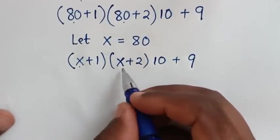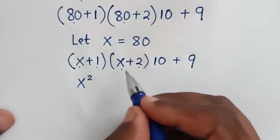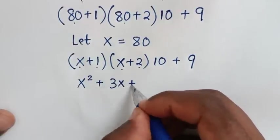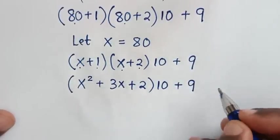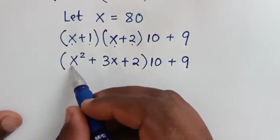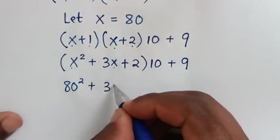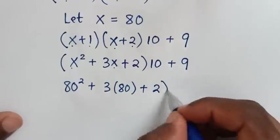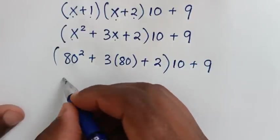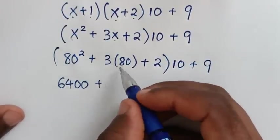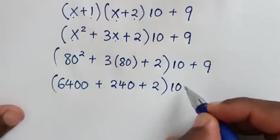Then into here, x times x is x squared, x times 2 is 2x, plus 1 times x is x, so 2x plus x gives plus 3x, then plus 1 times 2 is 2, bracket times 10, then plus this 9. Then we'll substitute the value of x, which is 8 (82), so it will be 8 squared, then plus 3 times 8, then plus 2, bracket, then times 10 plus 9.